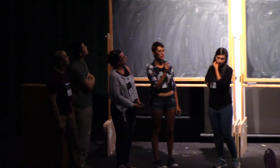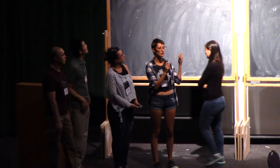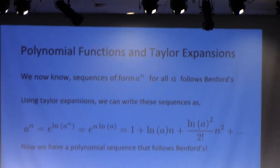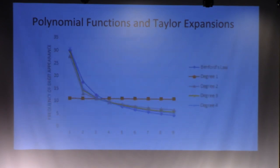So next we looked at polynomial sequences, and one of the tools we used was Taylor expansions. And fun thing about Taylor expansions is we can take sequences that are form A to the N, which we have already shown follow Benford's law, and make polynomial approximations. And so if we look at sequences of this form, we should expect them to follow Benford's, which, if you look at this graph, as we take the degree of the polynomial up of this form, we start to approximate Benford's law more.